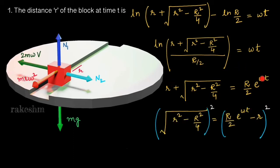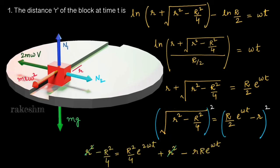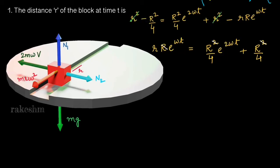Next, we take r to the right-hand side and square both sides. Squaring, the left side gives r² - R²/4. The right side is (a - b)² expanded: (R/2)²·e^(2ωt) + r² - 2·(R/2)·e^(ωt)·r. The 2s cancel, and after simplifying both sides, we cancel r² from both sides.